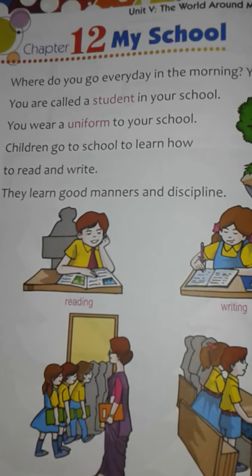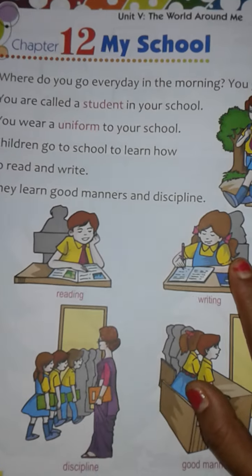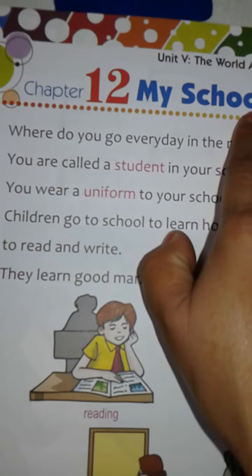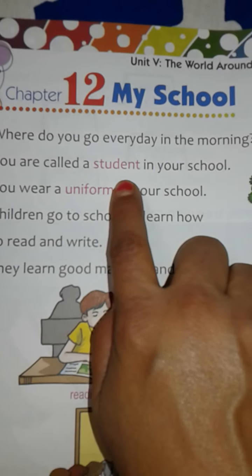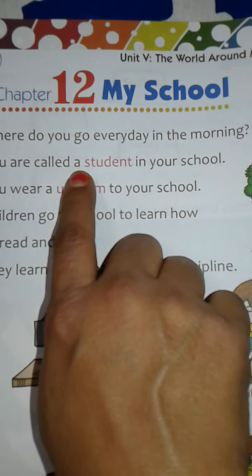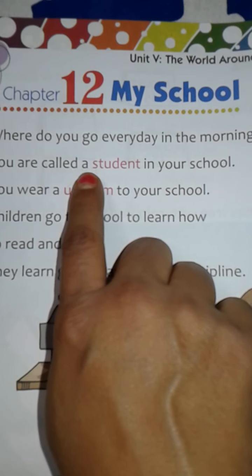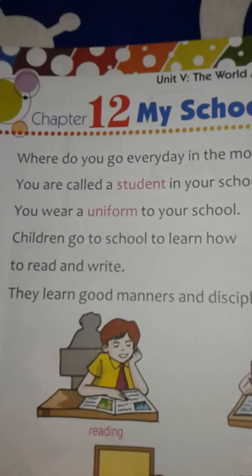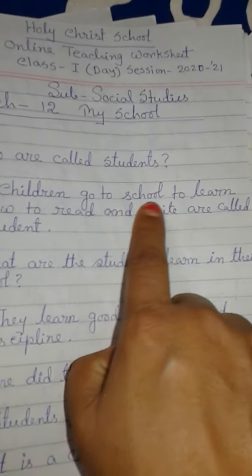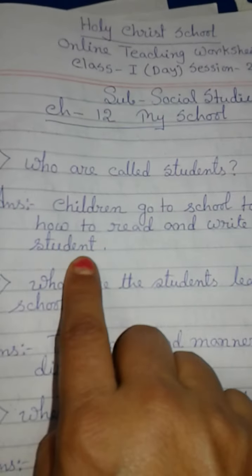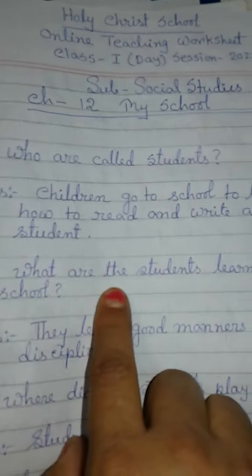Good morning students, today we will start our social studies revision. Today we will revise Chapter 12: My School. Children who go to school to learn how to read and write are called students.